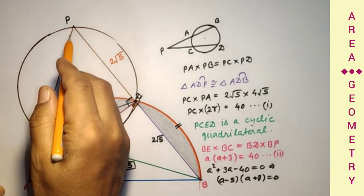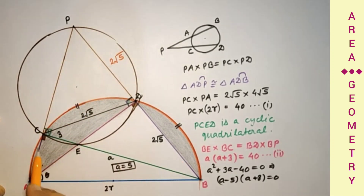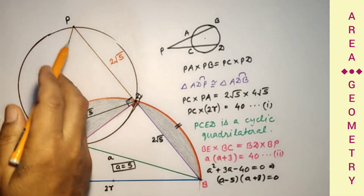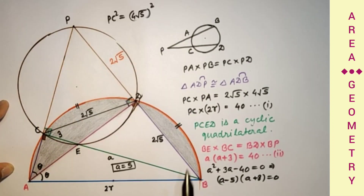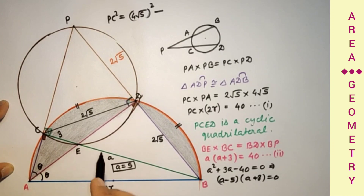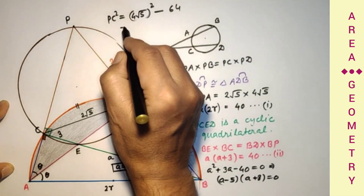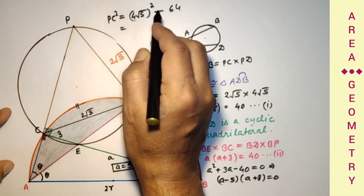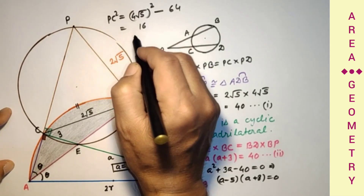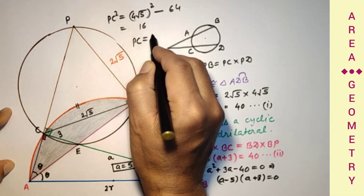Now using this right-angle triangle where the angle at C is 90°: PB² = PC² + CB². So PC² = PB² − BC². PB is 4√5, so PB² = 80. BC = a + 3 = 5 + 3 = 8, so BC² = 64. Therefore PC² = 80 − 64 = 16, giving PC = 4 units.